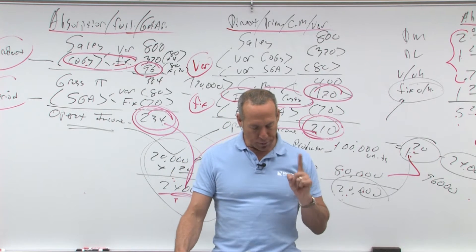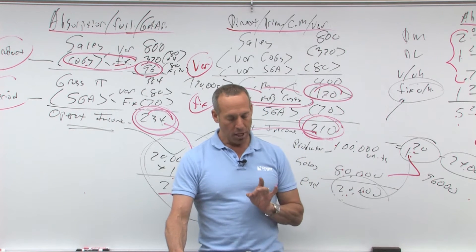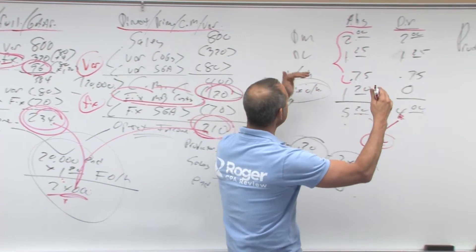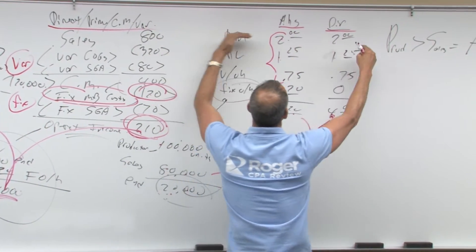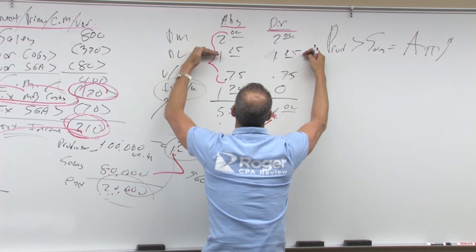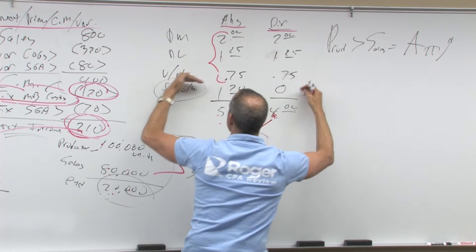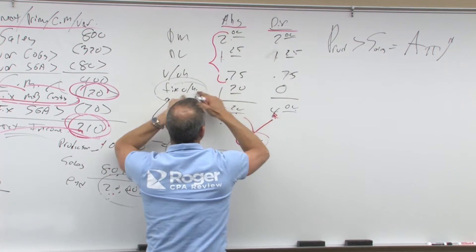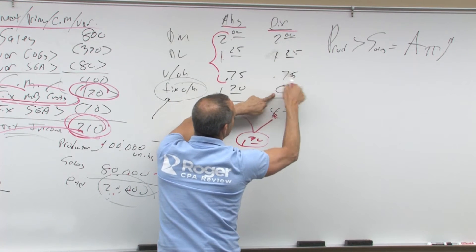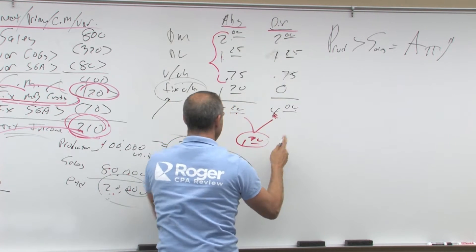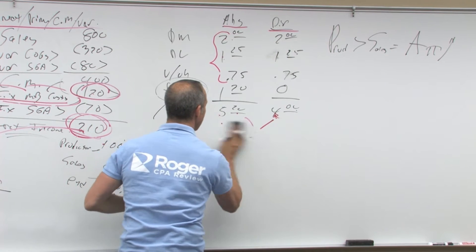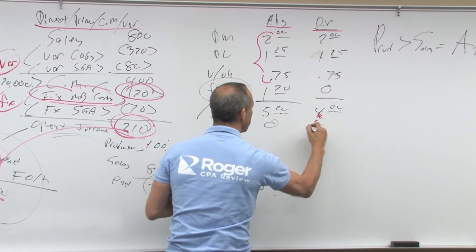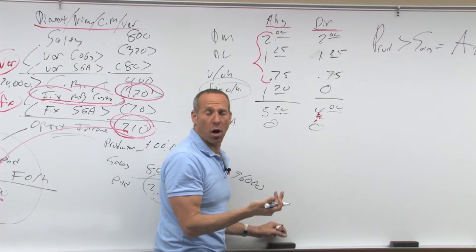We're looking at period costs versus product costs. Under either method, direct materials, direct labor, and variable overhead are product costs. The key difference is fixed manufacturing overhead — here under variable costing it's a period cost, under absorption it's a product cost. As for SG&A, it's always a period cost under either method — zero going into product cost regardless.